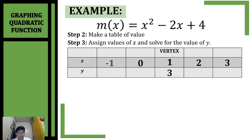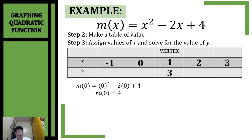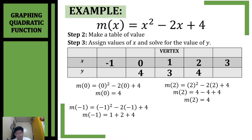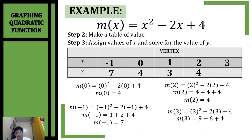Numbers closer to our vertex are 2, 3, 0, and negative 1. Now let's substitute all those values and solve for y. If x is 0, simplifying we have 4. If x is 2, substituting and combining like terms, y is also 4. Substituting negative 1 and combining like terms, y will be equal to 7. For positive 3, combining like terms, we also get 7.